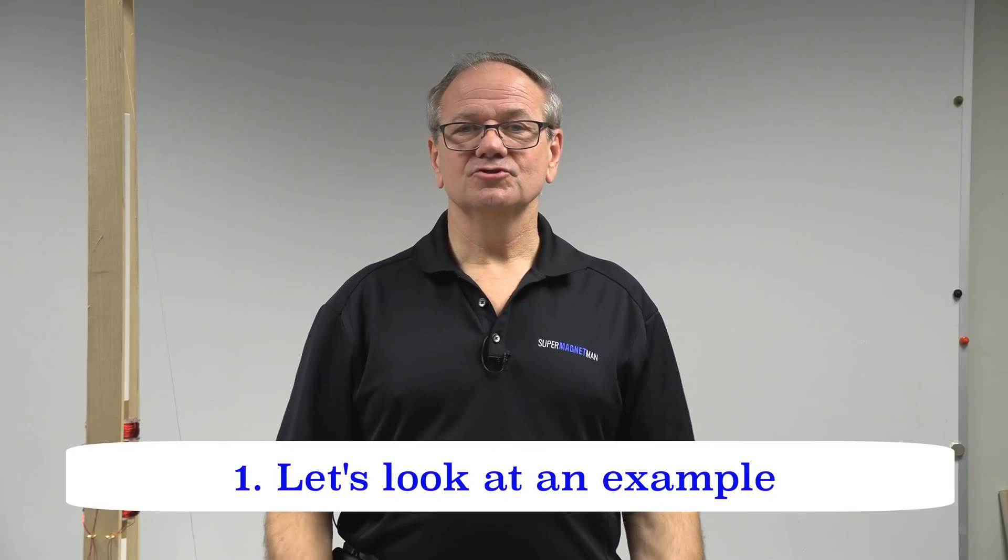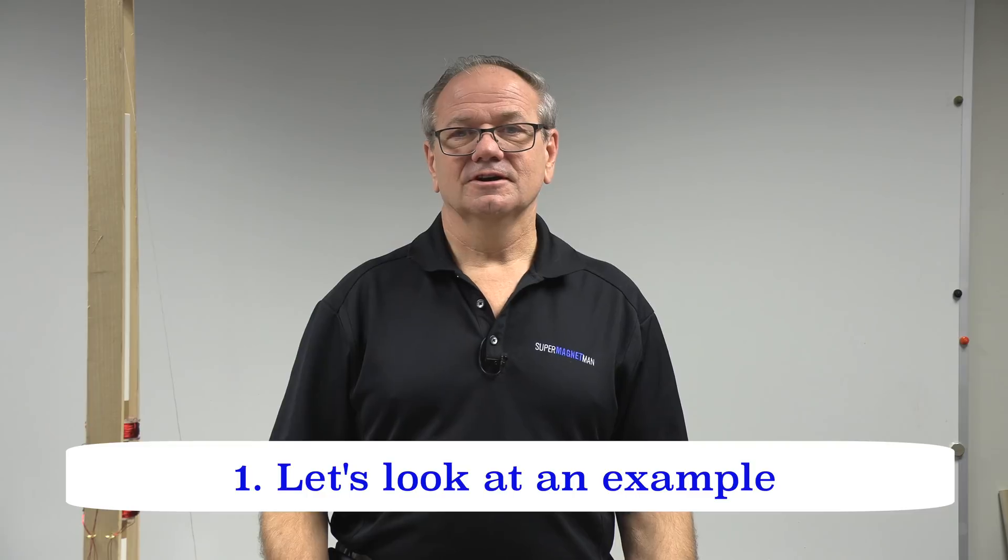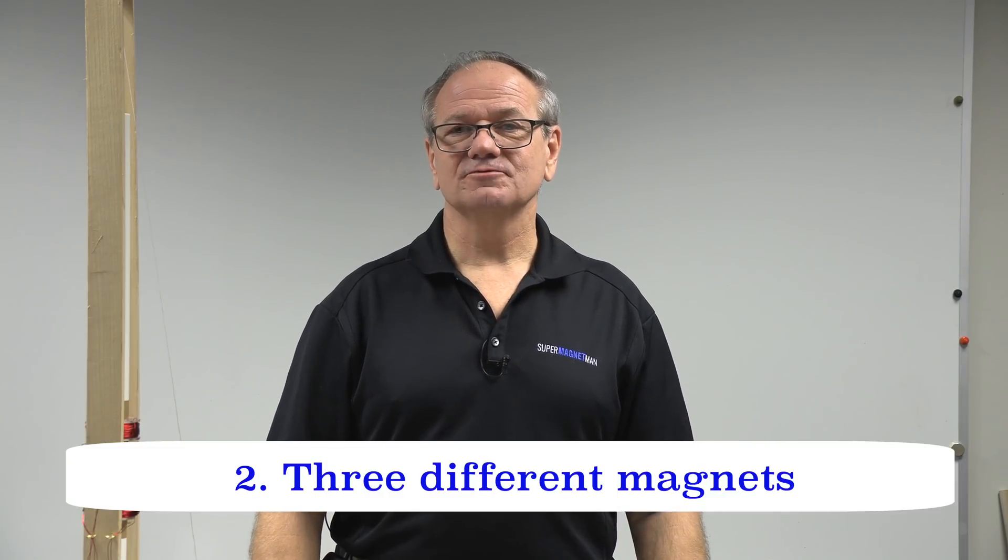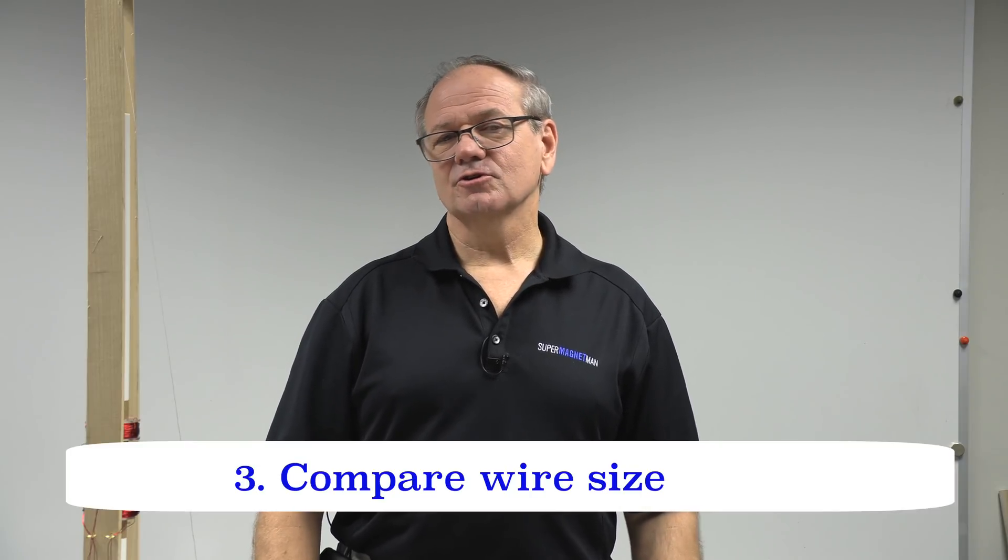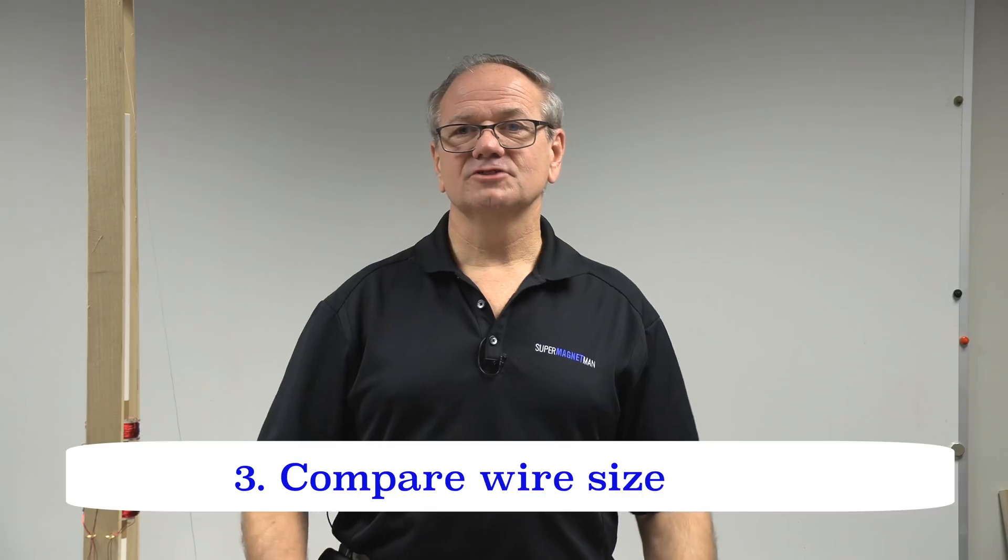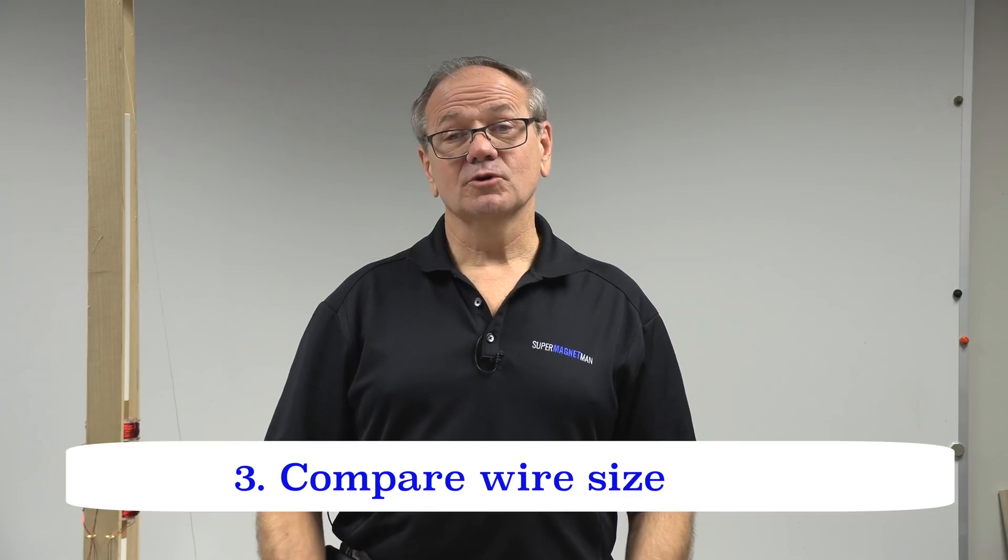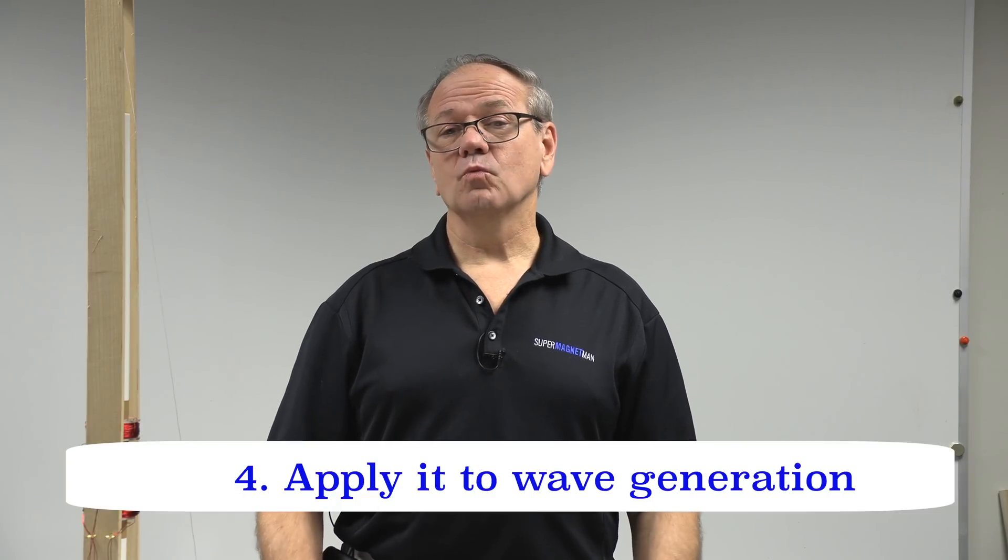First I'll do an example so you can see what we're talking about. Then we're going to compare three different types of magnets: a ring magnet one inch diameter half inch thick, and one inch diameter one inch long with a quarter inch hole in the middle. Then we're going to compare wire size, 24 gauge versus 28 gauge, and then see how this applies to wave generation.